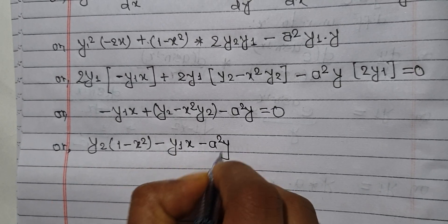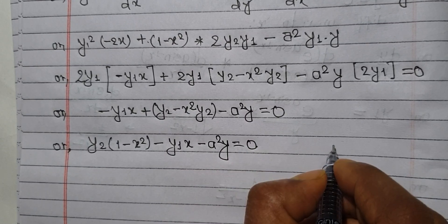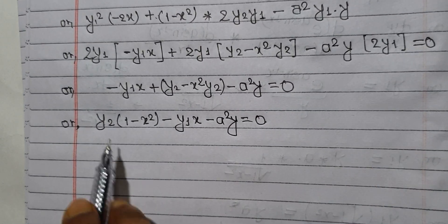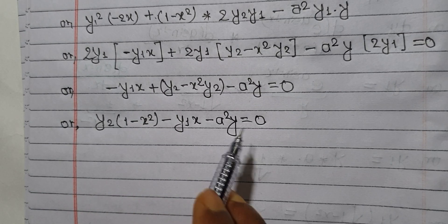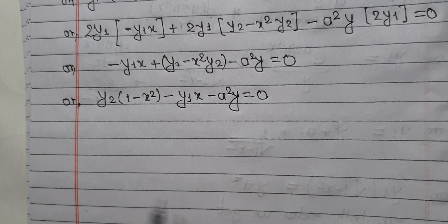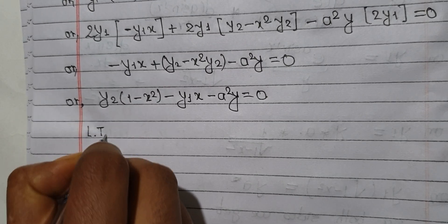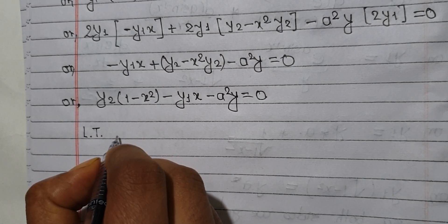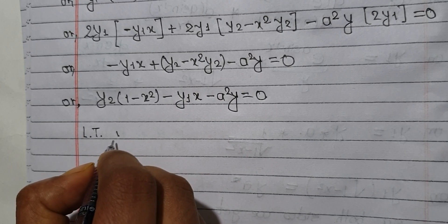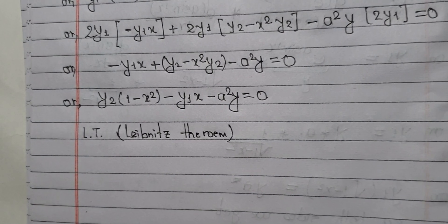So y2 and the result equal zero. Now we are going to use Leibniz's theorem to find the nth derivative. Using Leibniz's theorem is the shortcut method here.